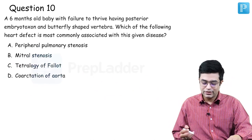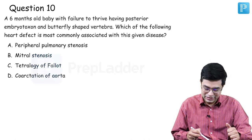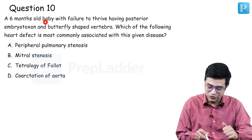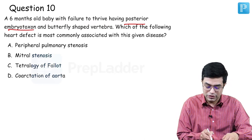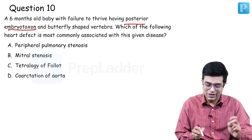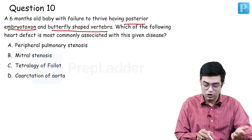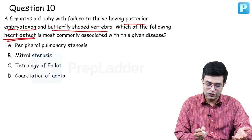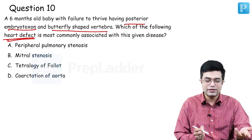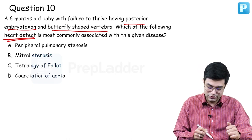Question number ten is also Alagille syndrome. Six-month-old, failure to thrive, posterior embryotoxon, butterfly-shaped vertebra — which heart defect is most commonly associated? The most common congenital heart disease in Alagille syndrome is pulmonary artery stenosis — peripheral pulmonary artery stenosis is more common than valvular stenosis. Answer: A — peripheral pulmonary artery stenosis. Alagille syndrome had two questions — if you were thorough with it you gained plus 2; if you skipped it, you were in trouble.